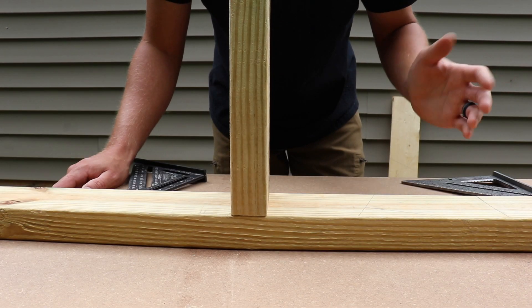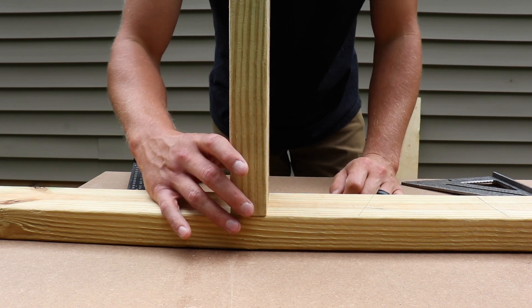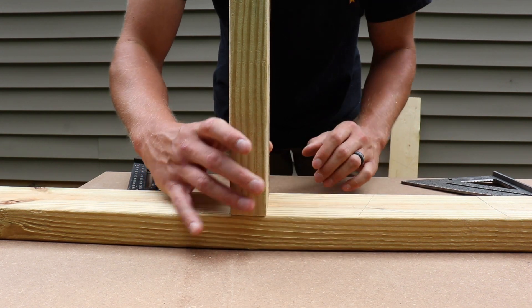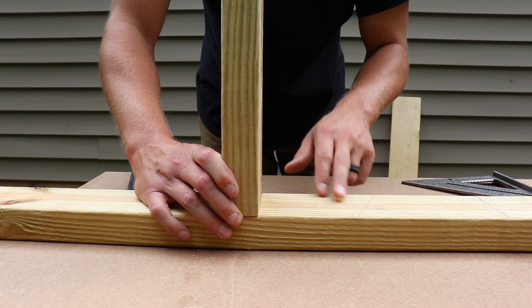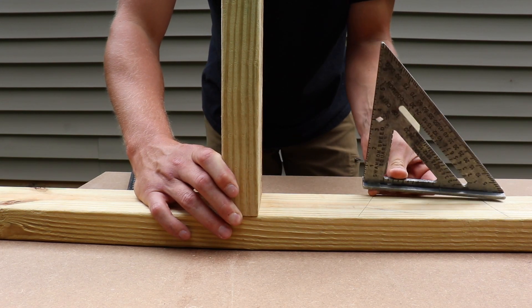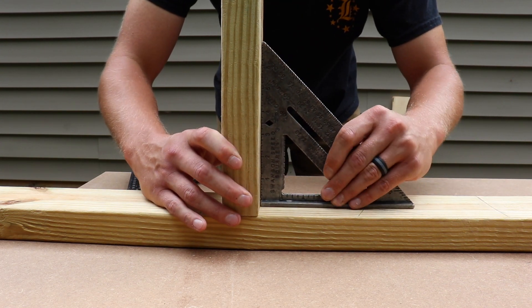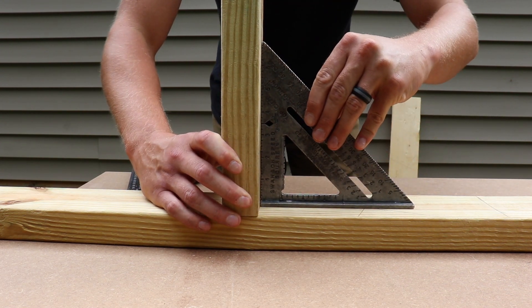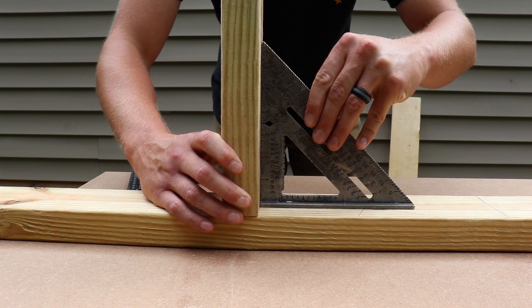Now, another thing you can do with your speed square is to use it to make sure things are actually square. So if you were going to frame this up, this is just a scrap piece that I cut. But if you were going to fasten this board to this bottom plate, you would want to make sure it's square before you do so. So you can use it to make sure it's square. If you use your speed square, you can see I'm trying to wiggle it back and forth. There's no play in it whatsoever.